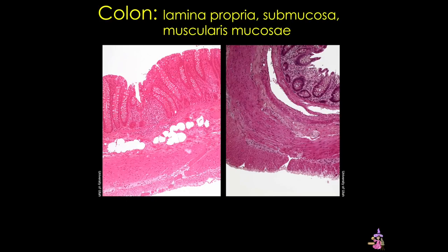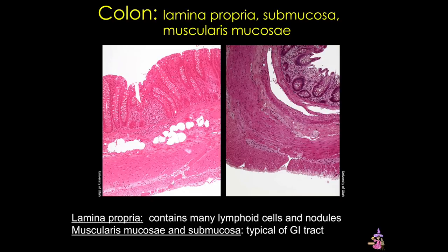Moving on to the lamina propria and the muscularis mucosae, other than the presence of lymphoid tissue in the lamina propria, these sublayers are otherwise pretty unremarkable. The submucosa is also typical of the GI tract and has no significant distinguishing characteristics.